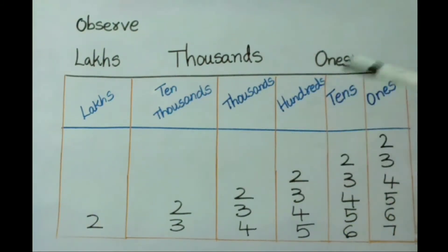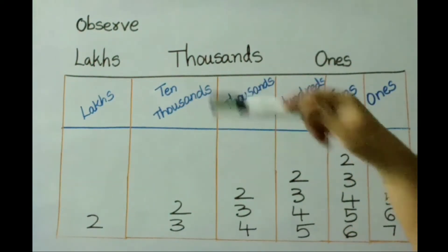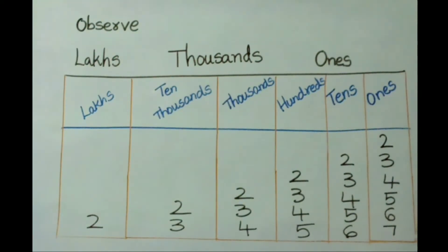Observe this table. Under ones period: ones, tens, hundreds place is there. Under thousands period: ones thousands and tens thousands place is there. Under lakhs: ones and tens place is there. Now observe the place value of 2 in each of the numbers. First, this 2 is present in ones place, so its value is 2 only. See here 23, here 2 is under tens place, so its value is 20. See next number 234, it is present in hundreds place, so 2 value is here 200.